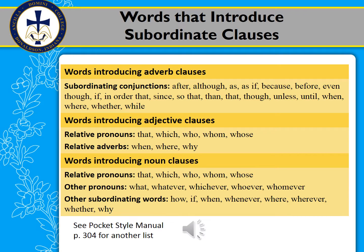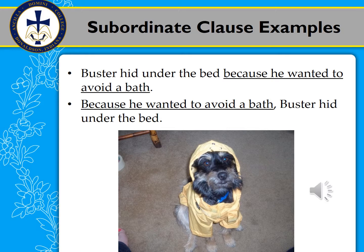As we get into some examples, first let's look at some words that introduce these different types of clauses. If you're wondering whether you have a dependent or independent clause, look at the first word. Oftentimes, if it's a subordinate clause, that first word will give it away — therefore, it is dependent and can't act as its own sentence. There's a whole list here you can look through — you may want to pause the presentation and read through those. Remember that these clauses act as different parts of the sentence: as an adverb, an adjective, or a noun.